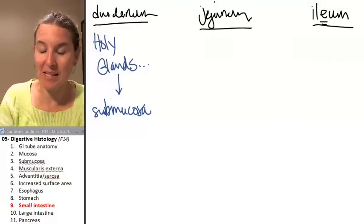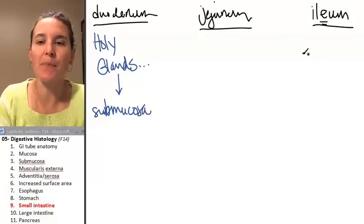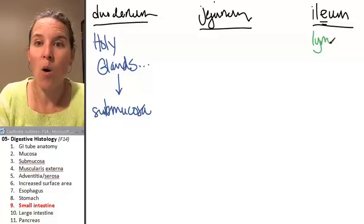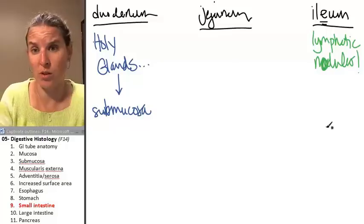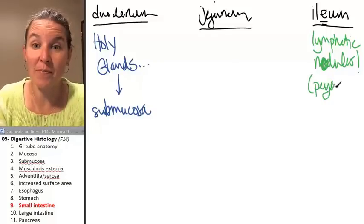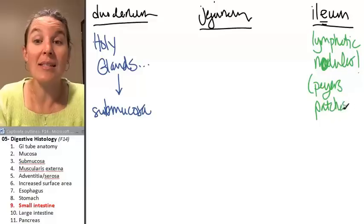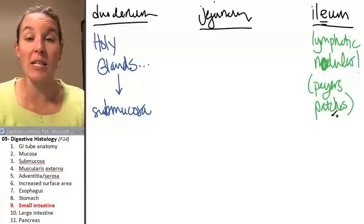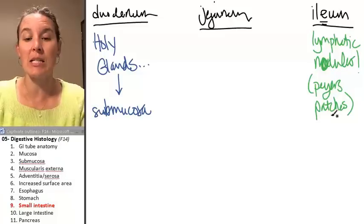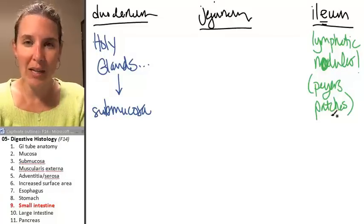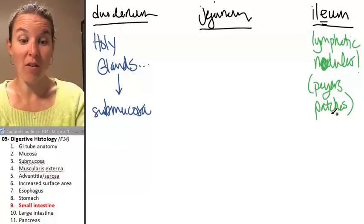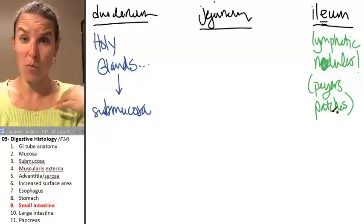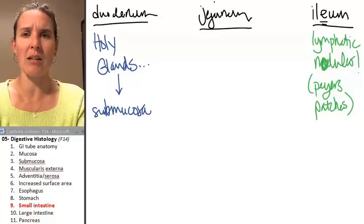Let's do the ileum next, because the ileum has one feature that is really, really obvious: lymphatic nodules — holy lymphatic nodules. Those lymphatic nodules are called Peyer's patches. Sometimes the Peyer's patches are found in the mucosa, sometimes in the submucosa, so where they're located doesn't tell you anything. The number of them tells you something — the more Peyer's patches there are, the more you know you're probably in the ileum.